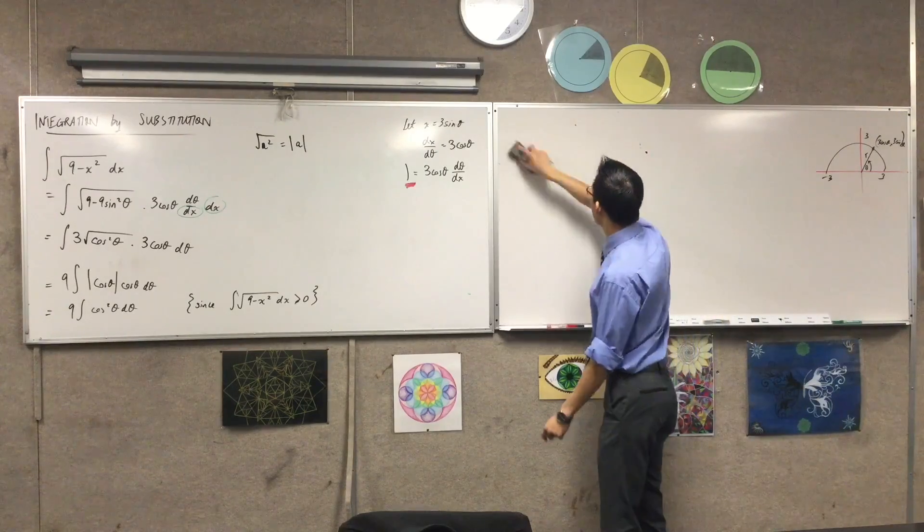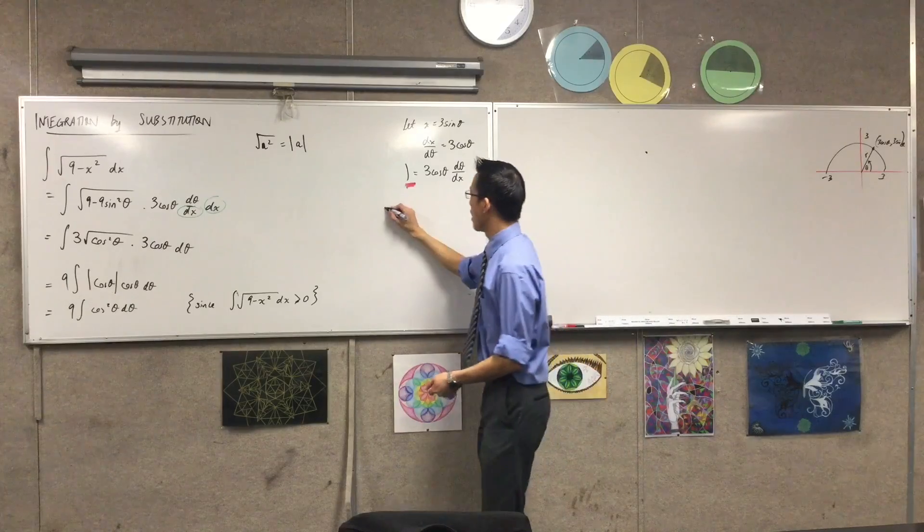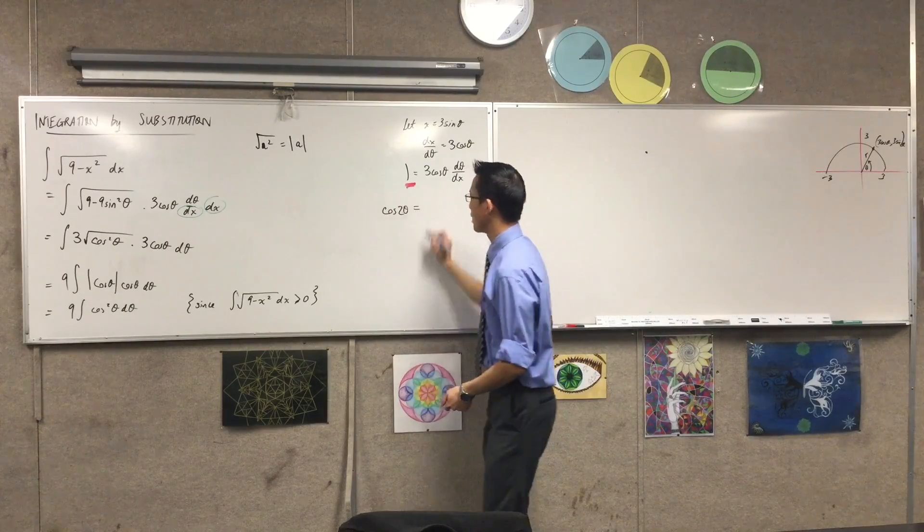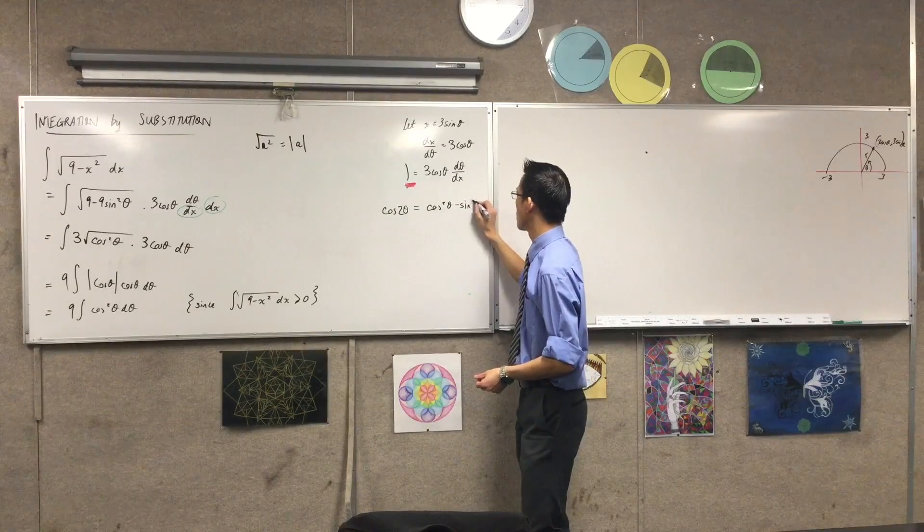Cos squared, the way I'm going to take care of this guy, integrate here, is I'm going to remember my double-angle formulas. Just put this off on the side here. Cos 2 theta, that's cos squared minus sine squared.